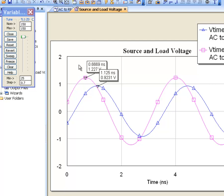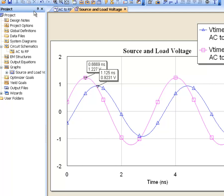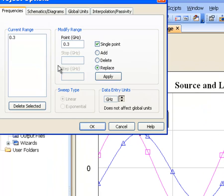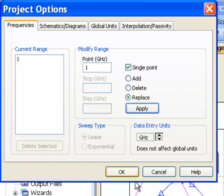Now it would be interesting to see what happens if we increase the frequency. So we go back to project options, we put 1 gigahertz there, apply and then OK. And then we simulate.